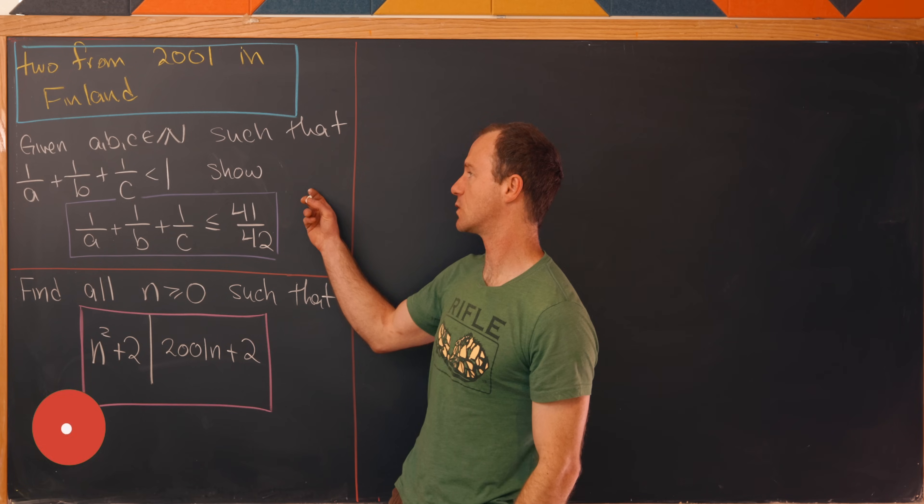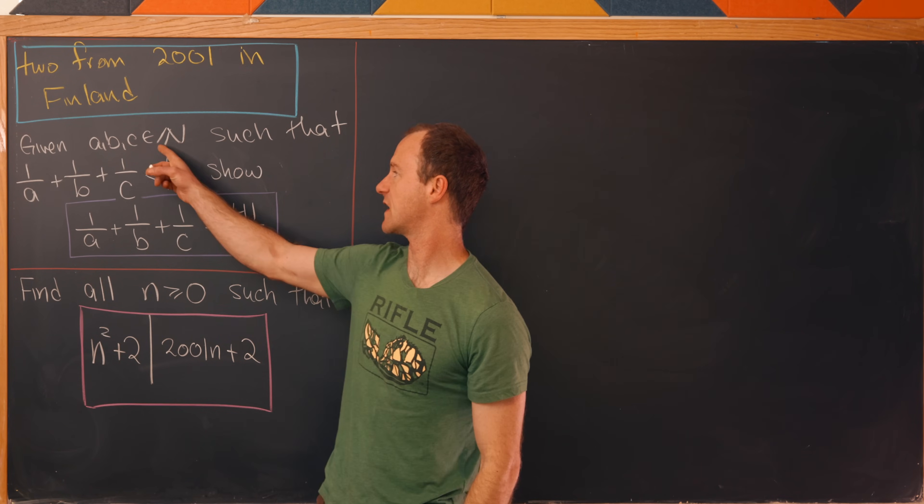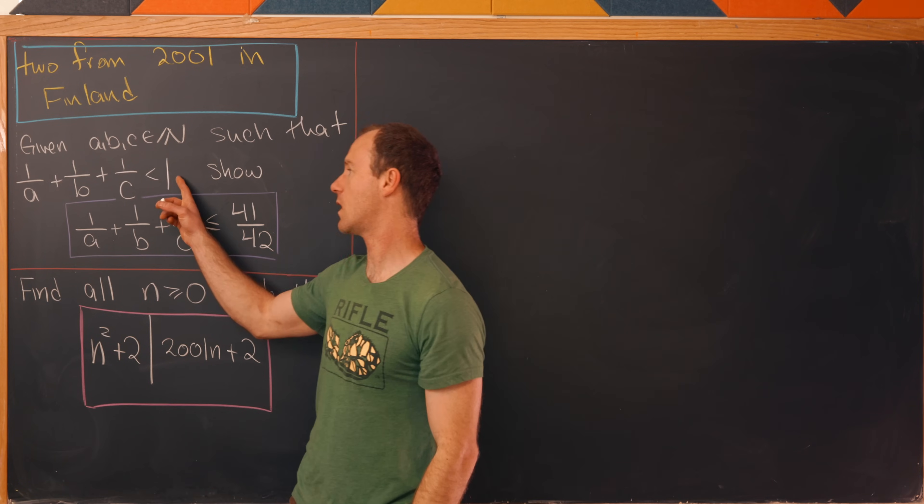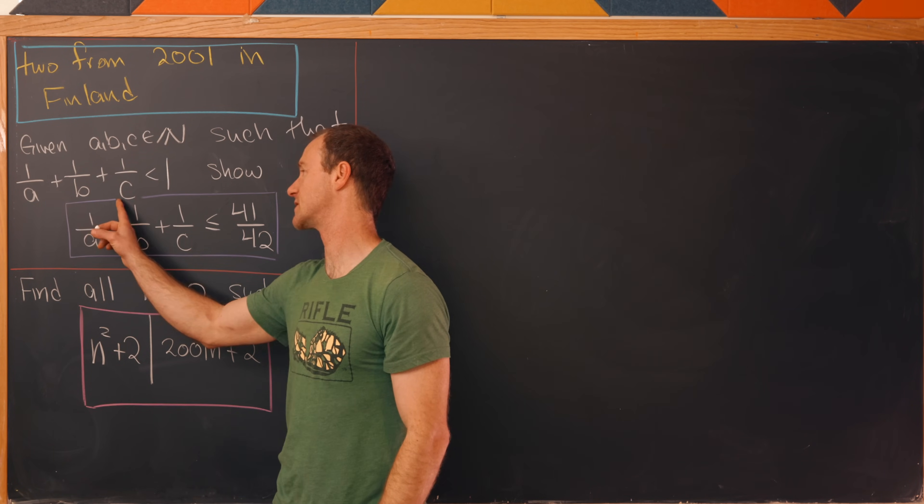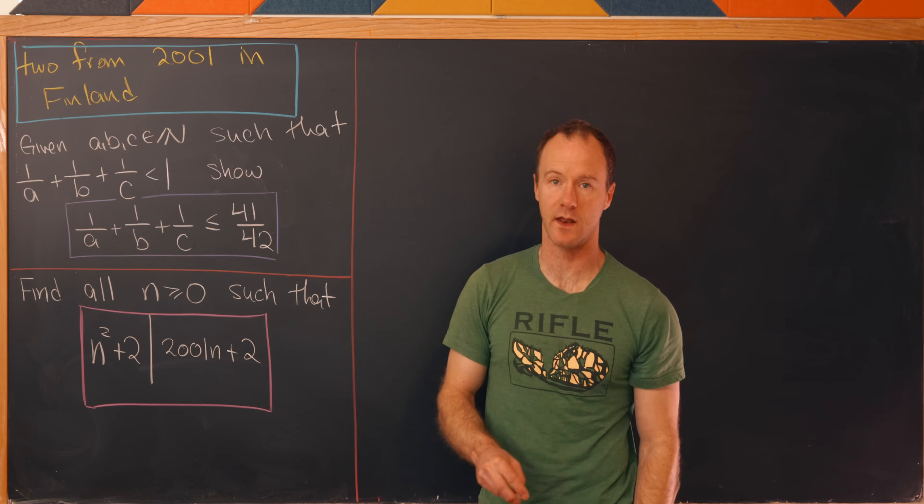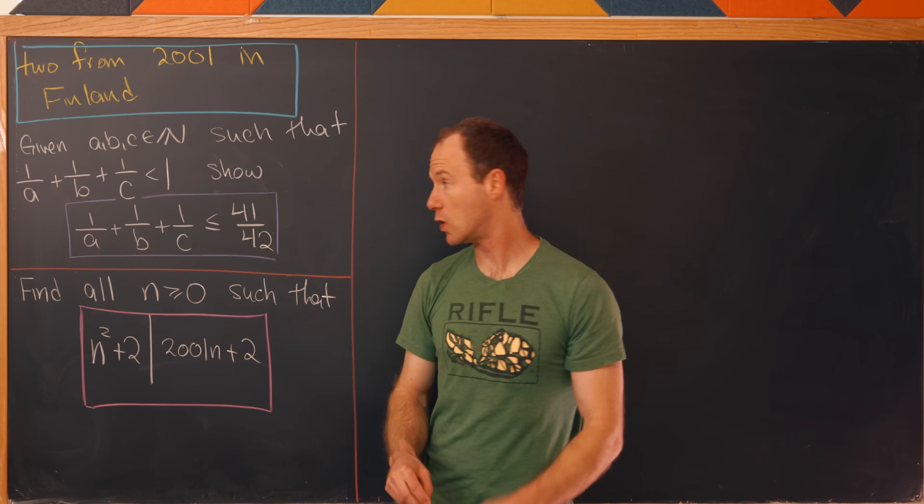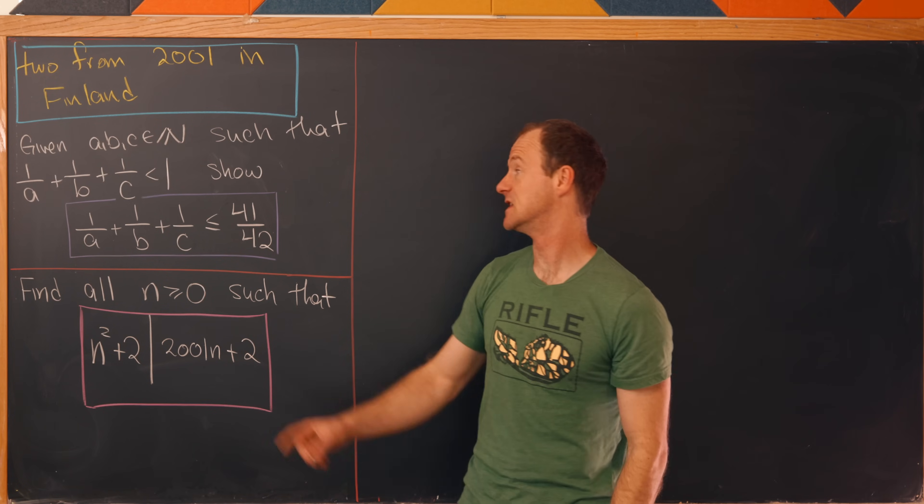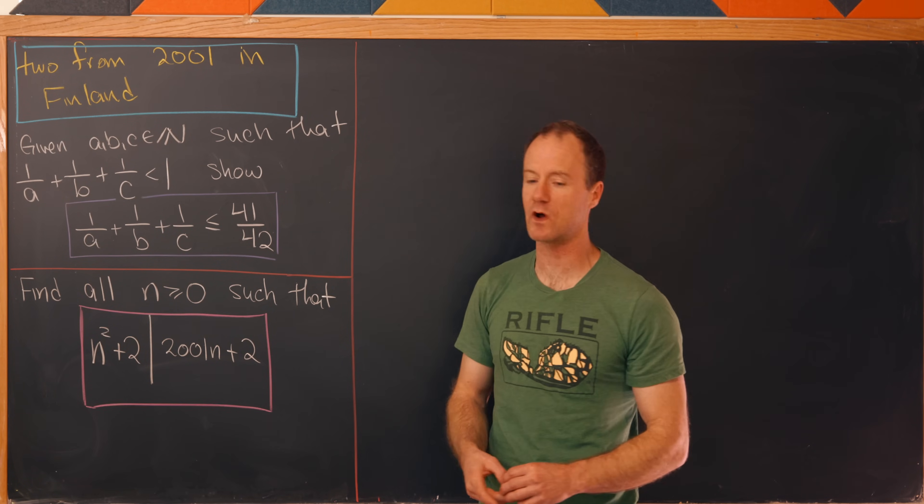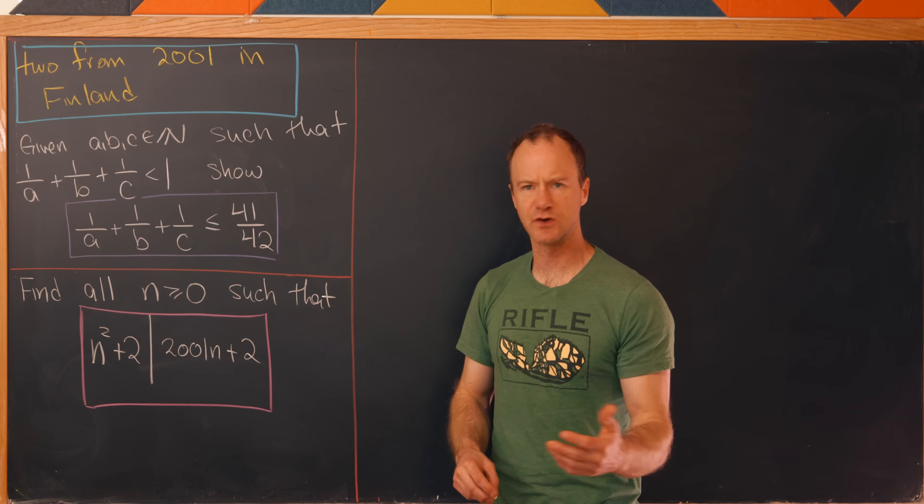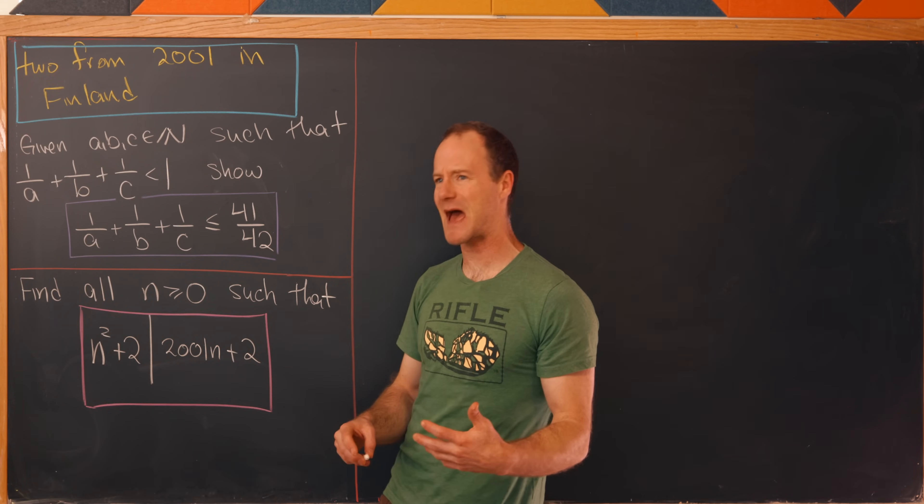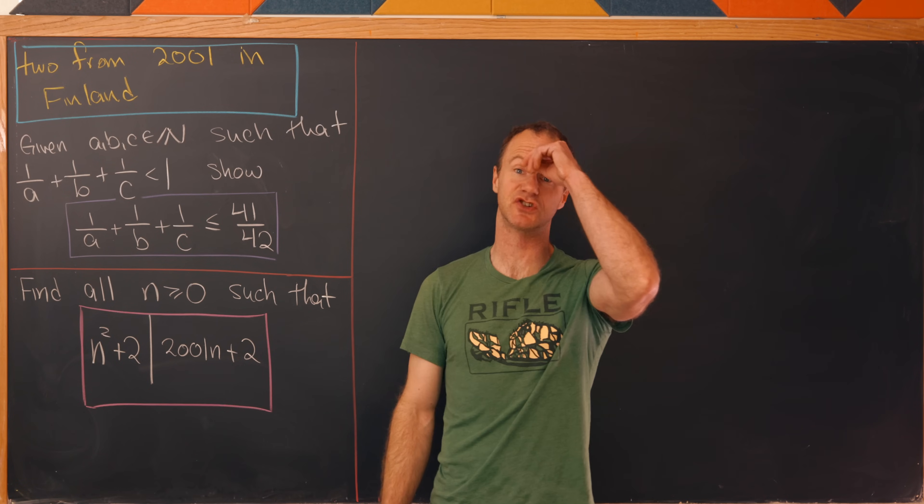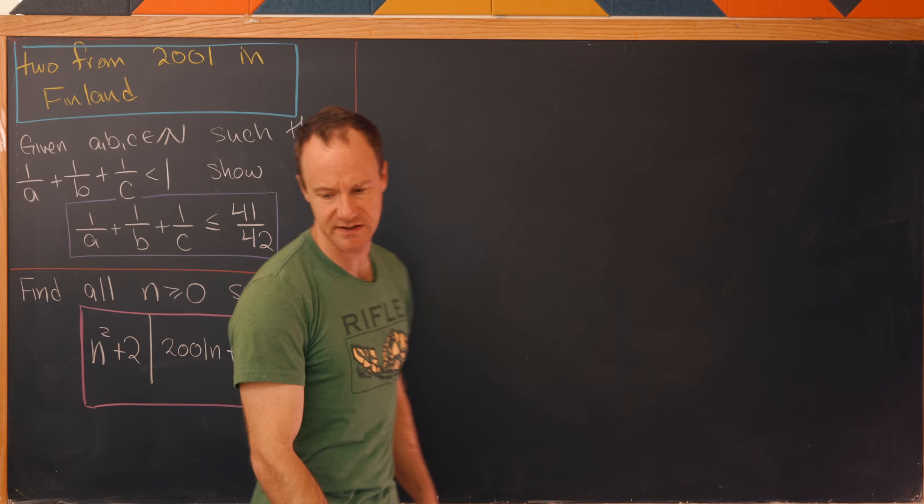For the first one, we want to suppose that we've got natural numbers A, B, and C satisfying the inequality that if we take the sum of their reciprocals, it's less than 1. Then our goal is to show that the sum of their reciprocals is in fact less than or equal to 41/42. So in other words, we're essentially maximizing the sum of the reciprocals given this constraint.